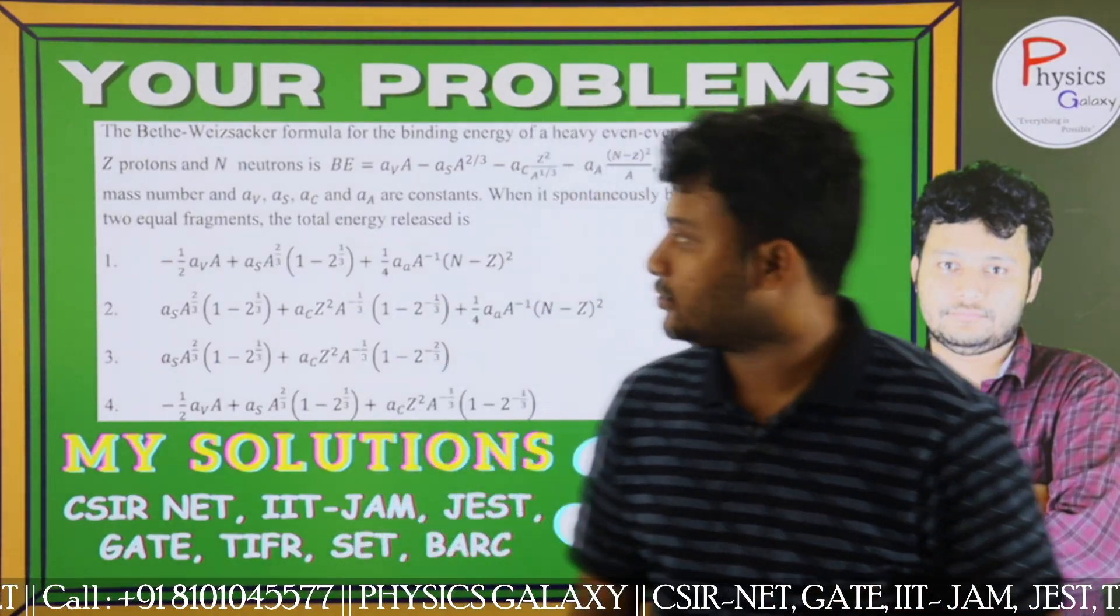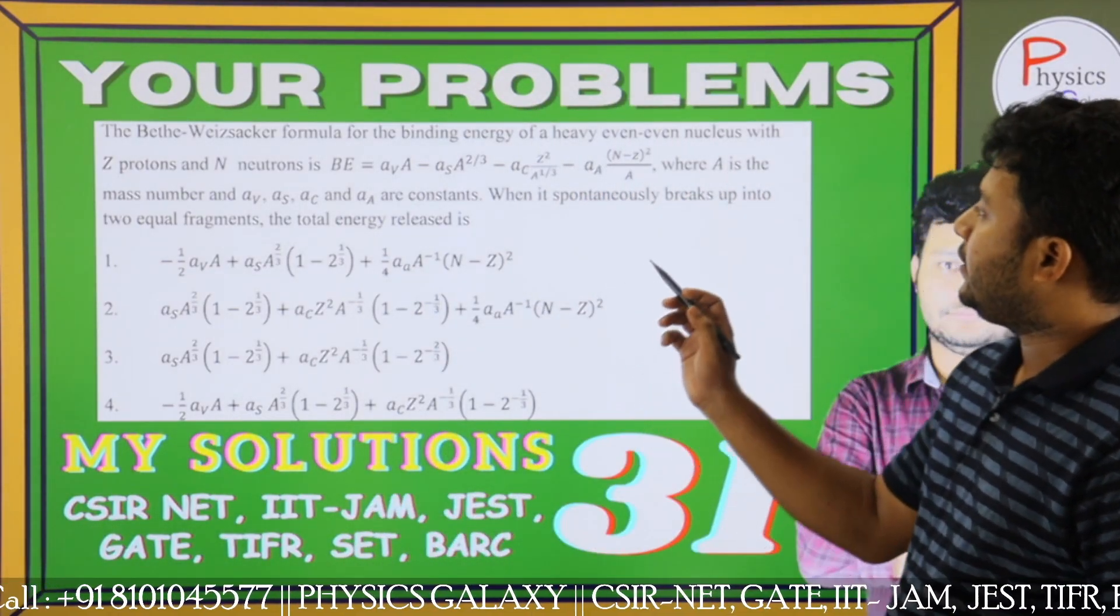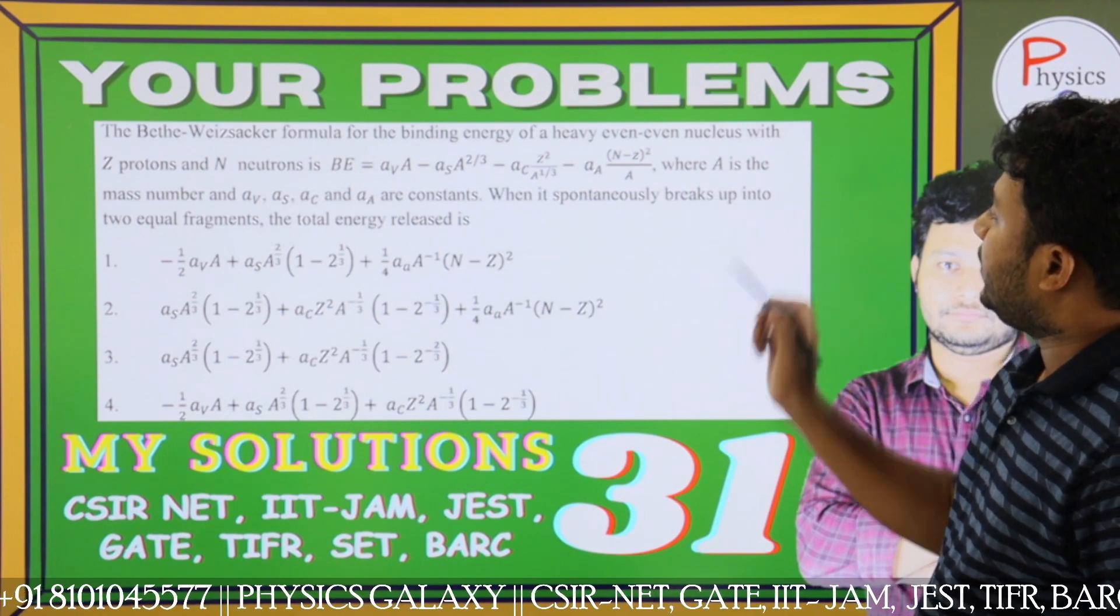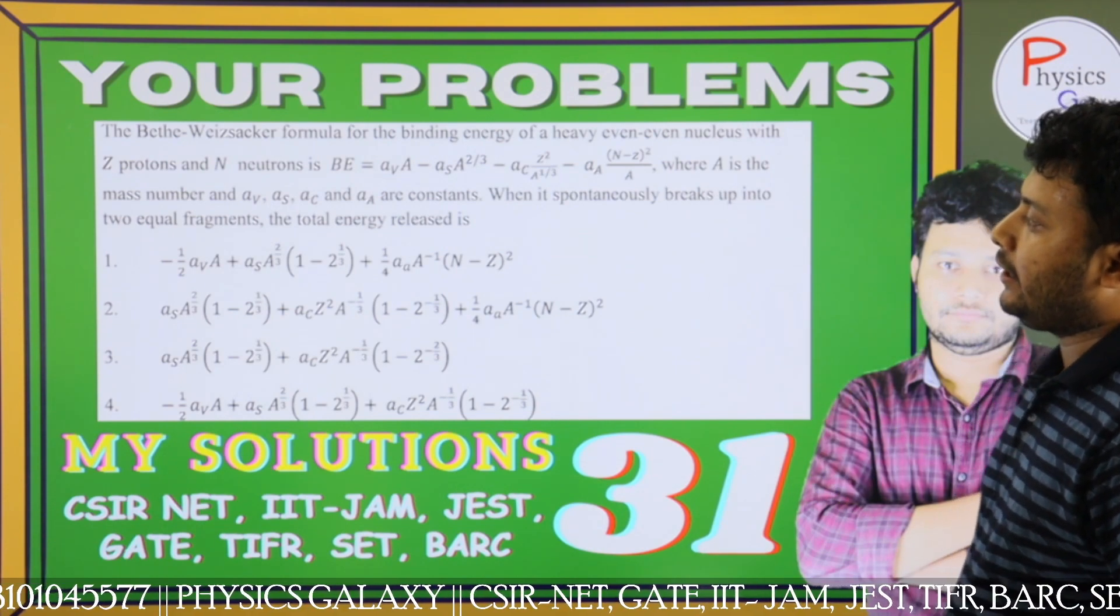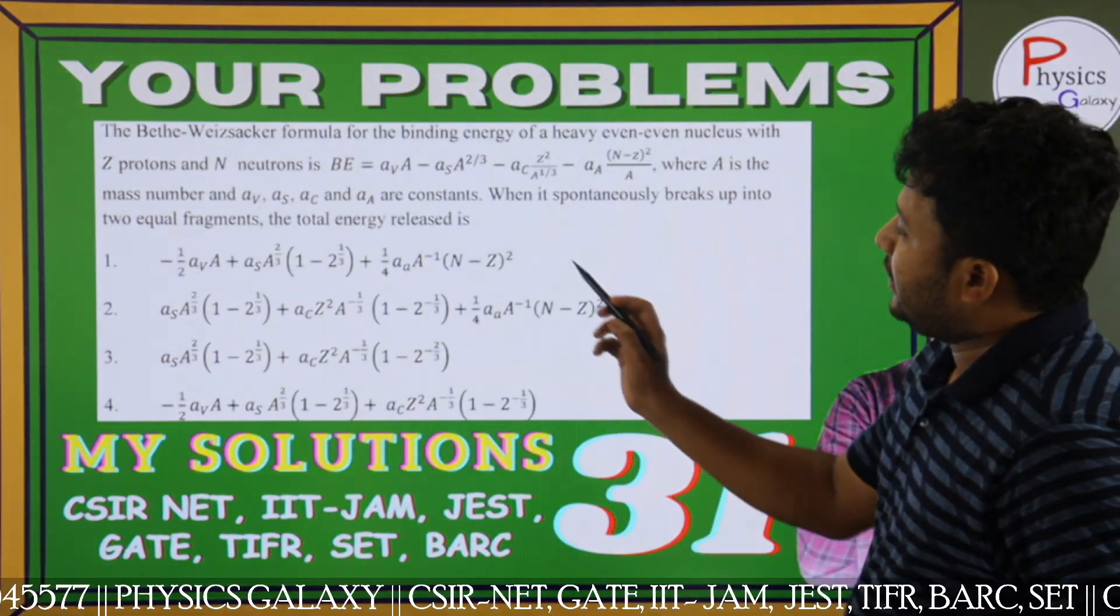Hello everyone. Today we have a question. The binding energy of a heavy even-even nucleus with Z protons and N neutrons. Binding energy is given in a form.